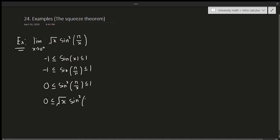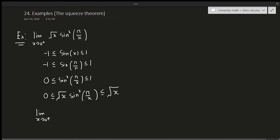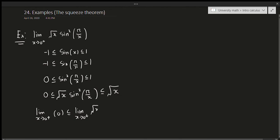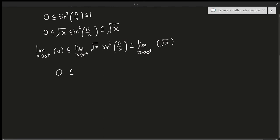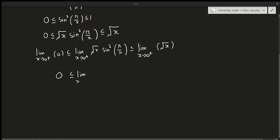Now I multiply both sides by the square root of x. I get: zero is less than or equal to square root of x times sine squared of pi over x, which is less than or equal to square root of x. Then I take the limit as x approaches zero from the right of all three parts: zero is less than or equal to the limit of square root of x times sine squared of pi over x, which is less than or equal to the limit of square root of x.